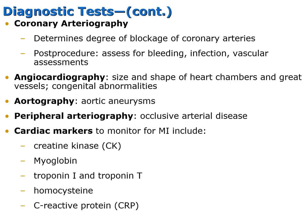In coronary arteriography, we're looking at the degree of blockage of the coronary arteries. After the procedure, assess for bleeding, infection, and vascular difficulties by completing vascular assessments. For angiocardiography, we're looking at the size and shape of the heart, its chambers, and the great vessels, looking for congenital abnormalities. For aortography, we're looking for aortic aneurysms. For peripheral arteriography, we're looking for occlusive arterial disease. Cardiac markers used in lab work to monitor for myocardial infarction include creatinine kinase, myoglobin, troponin I, troponin T, homocysteine, and C-reactive protein.